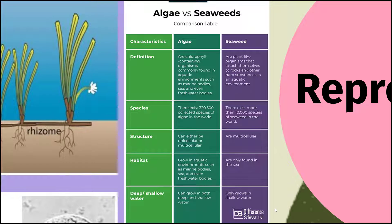There are differences between algae and seaweed. Algae are chlorophyll-containing organisms commonly found in aquatic environments — largely unicellular, though some are multicellular — and grow in marine as well as freshwater bodies. Seaweed is a plant-like organism that attaches to rocks and other hard substances, is always multicellular, and is only found in the sea. Algae can grow in both deep and shallow water, whereas seaweed can only grow in shallow water, because that multicellular structure requires greater exposure to the sun.